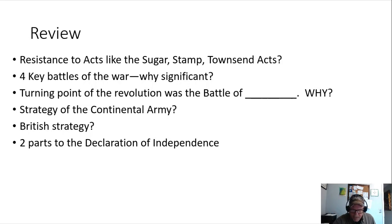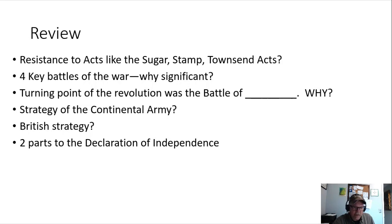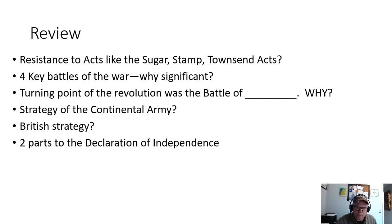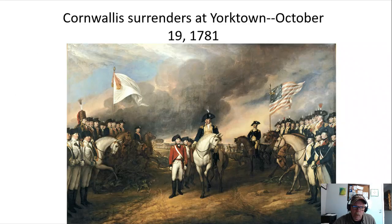A few people got the Declaration's two parts wrong on the quiz. The beginning is an eloquent call to human rights — life, liberty, pursuit of happiness, all men created equal — an aspirational statement of what the country is going to be if they win. But really two-thirds of the document is a complaint list directed at the king, showing here's why we're going to war. It puts before the whole world — including the French — that this is not a whim; these are specific accusations. The rest of the world looks at it and thinks, 'maybe if I were in that position I'd do the same thing.'